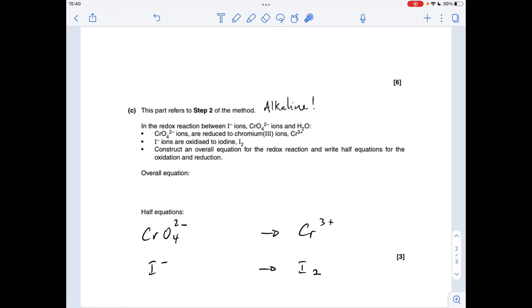So starting with the chromium one: the chromium's in its plus six oxidation state here and it's gone down to plus three. So it's been reduced, it's gained electrons—it's gained three electrons to bring about that change from plus six to plus three. Next thing I'm going to do is sort out the charge so that it's the same left and right. So at the moment we've got two minus, three minus, five minus charge on the left, three plus on the right. So I'm going to use hydroxide ions to make the charges the same.